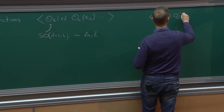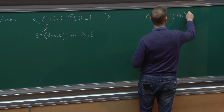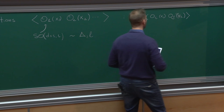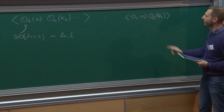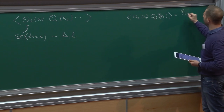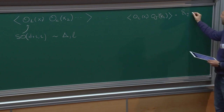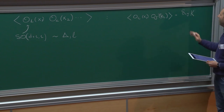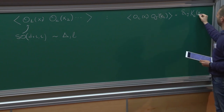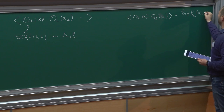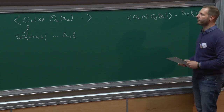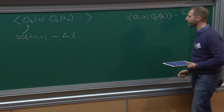The conformal group in d dimensions is isomorphic to SO(d+1, 1) in Euclidean d dimensions. You can classify irreducible representations according to the scaling dimension delta and the irreducible representation under SO(d) rotations — in three dimensions that's just an integer L. The main ingredients are correlation functions of operators inserted at different points. Because you have symmetry, these correlation functions must be covariant. Conformal symmetry fixes the form of two-point functions and three-point functions completely.